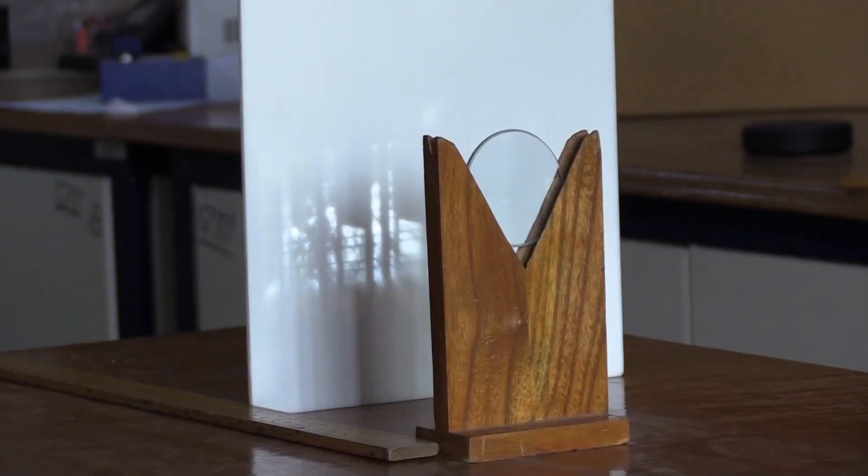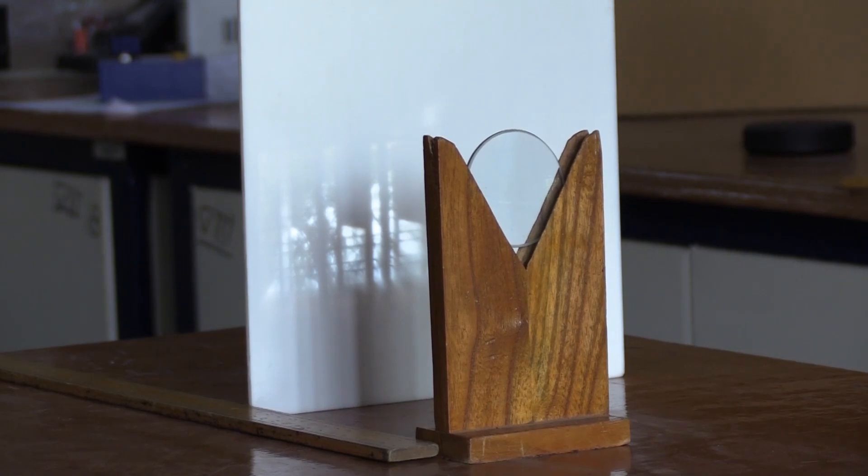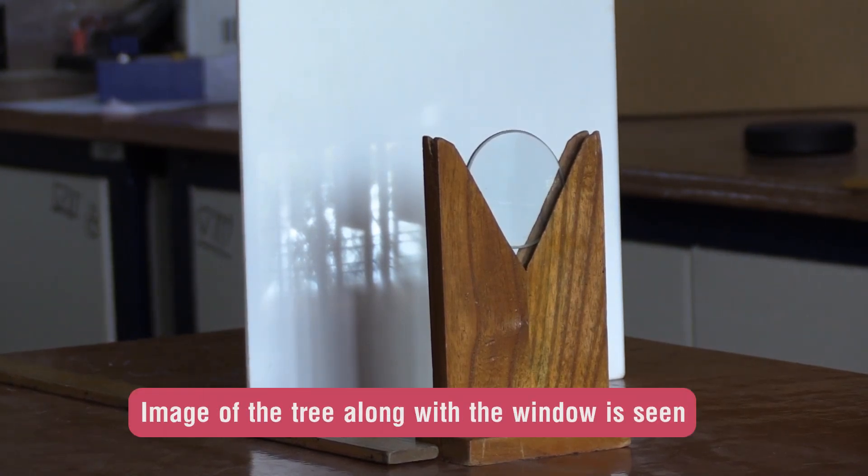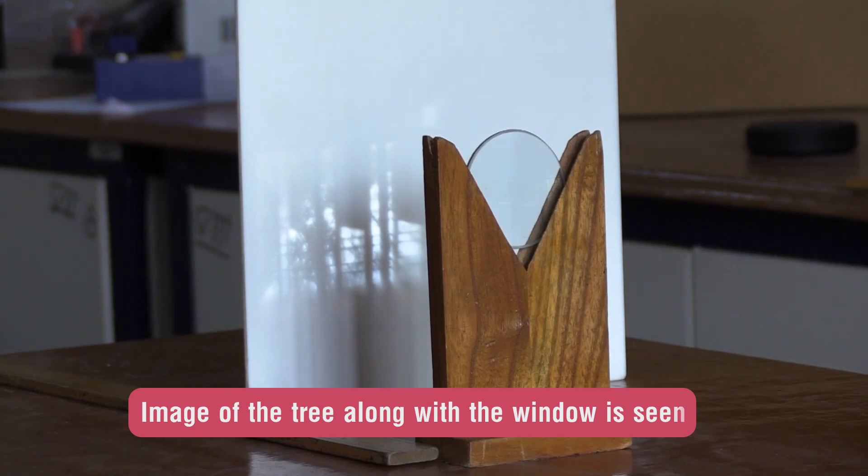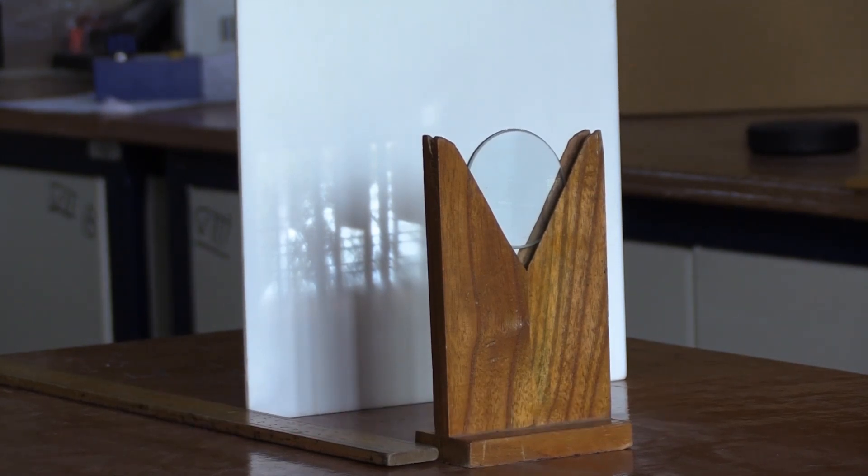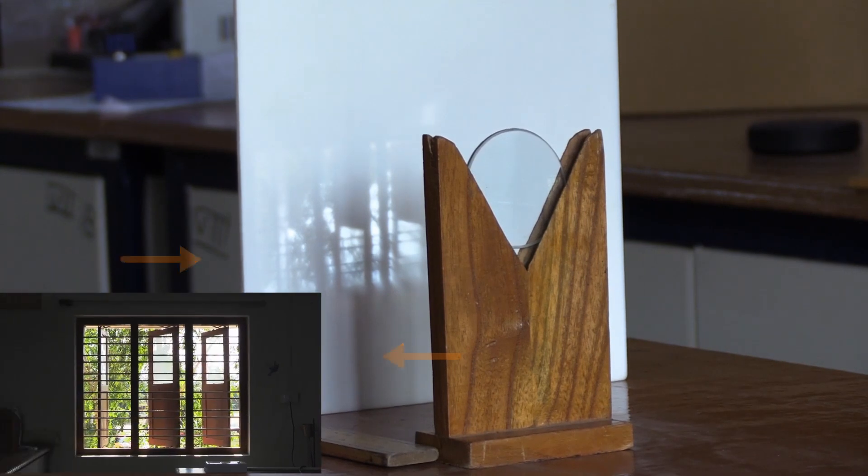Here, as light rays from the tree and the window fall on the lens, the image of the tree along with the window is seen. Notice that the image is inverted. The transparent pane on the top half of the laboratory window is observed at the bottom half in the image.